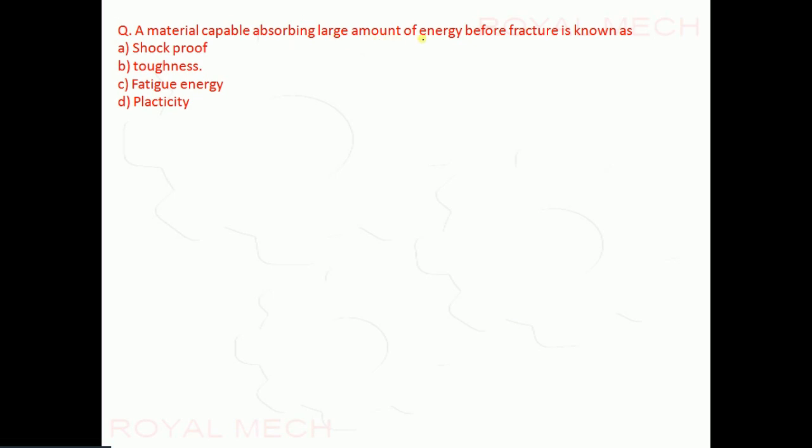A material capable of absorbing a large amount of energy before fracture is known as: shockproof, toughness, putty energy, or plasticity. The answer is toughness, as toughness is the property of a material to absorb large amounts of energy before fracture.